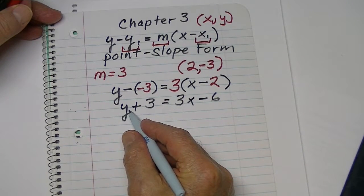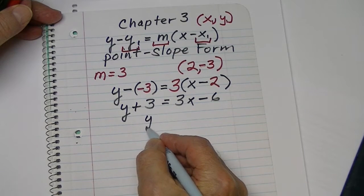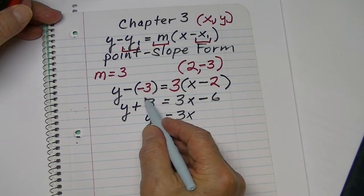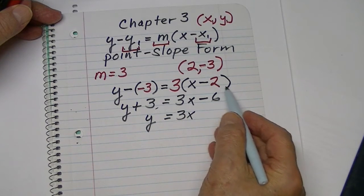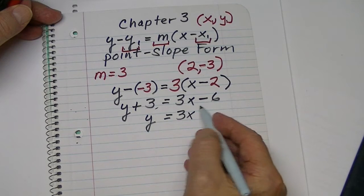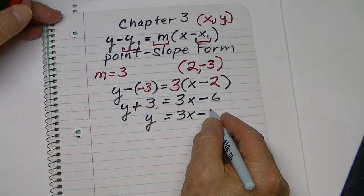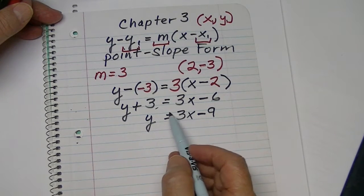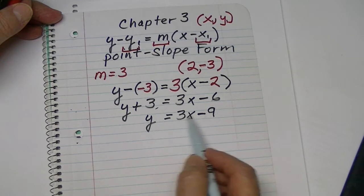Now, we want to isolate the Y. So, we get Y over on this side equals 3X. I'm now going to take my 3, transpose it. On this side, it becomes a negative 3. So, this will become a negative 9. Now, there's our basic equation in slope-intercept form.